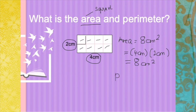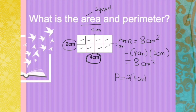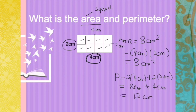Now how about the perimeter? The perimeter is the distance around your 2D shape. So if the bottom side is 4 cm, therefore the top will also be 4 centimeters and the side will also be 2 centimeters. So we have 2 of our 4 centimeters plus 2 of our 2 centimeters. Therefore, 2 times 4 will be 8 centimeters, and 2 times 2 is 4 centimeters. So 8 plus 4 will be 12 centimeters.